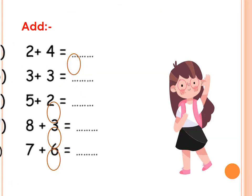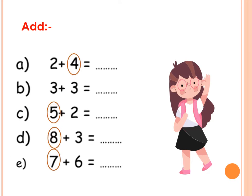Now, with the addition. Do you remember the addition? We put the bigger number in our mind and raise the small number in our fingers. Let's start with A. 2 plus 4 equals — 4 in your mind and 2 in your fingers. After 4: 5, 6. Here is 6.